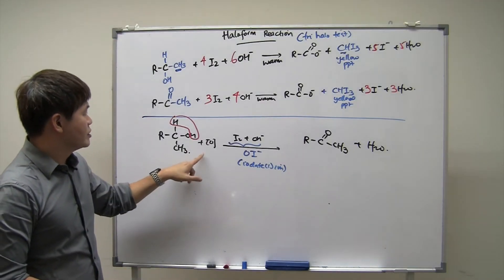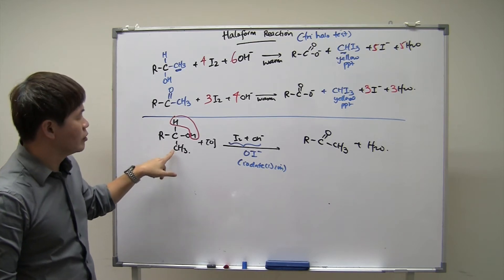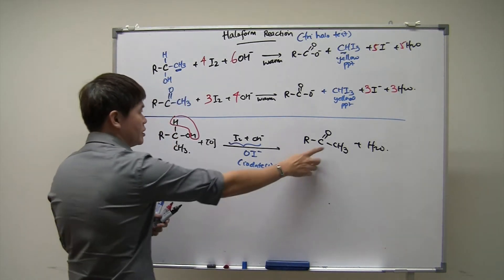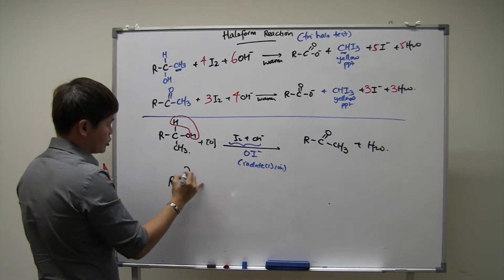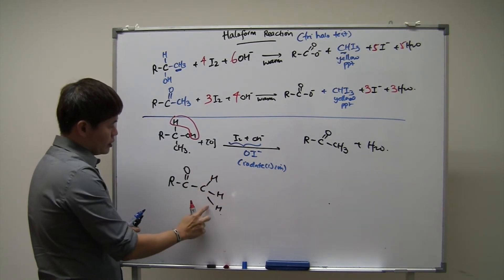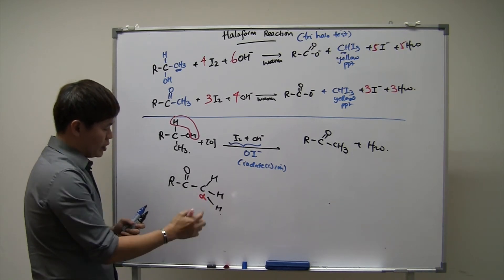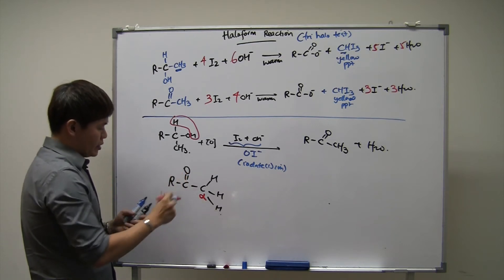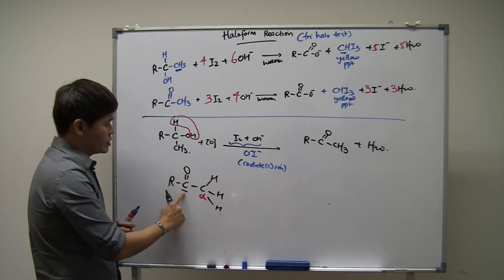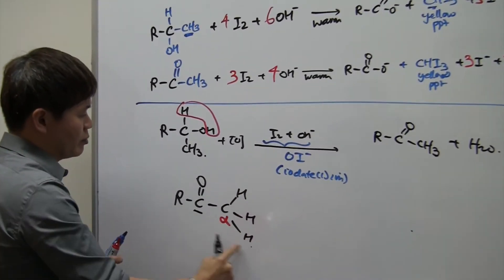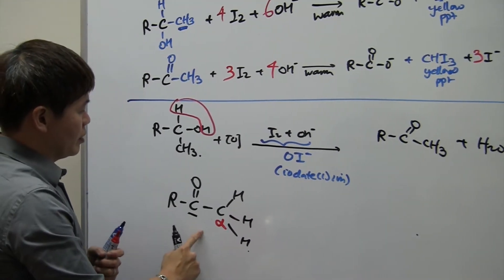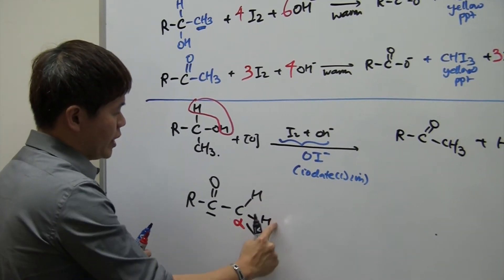After the methyl alcohol is oxidized to a methyl carbonyl, there is an interesting property of this methyl carbonyl to consider. The carbonyl contains a CH₃ group, and the carbon of that CH₃ is called the alpha carbon. In carbonyls, the C=O group is the reference — the first carbon on either side of the carbonyl is called the alpha carbon. This methyl carbonyl has at least one alpha carbon with three hydrogens attached to it.